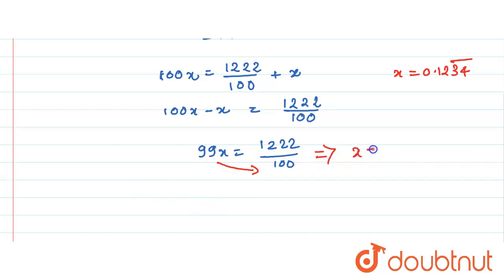And now here just shift this 100 into the denominator. So I get x is equal to 1222 divided by 9900.